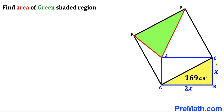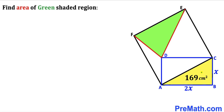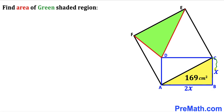Welcome to PreMath. In this video we have a blue rectangle ABCD and a square ACEF put together such that one of the side lengths of the square is AC, which is the diagonal of the blue rectangle. The area of the yellow right triangle ABC is given as 169 centimeters square, side AB is represented by 2x, and side BC is x. Our task is to calculate the area of the green shaded triangle.